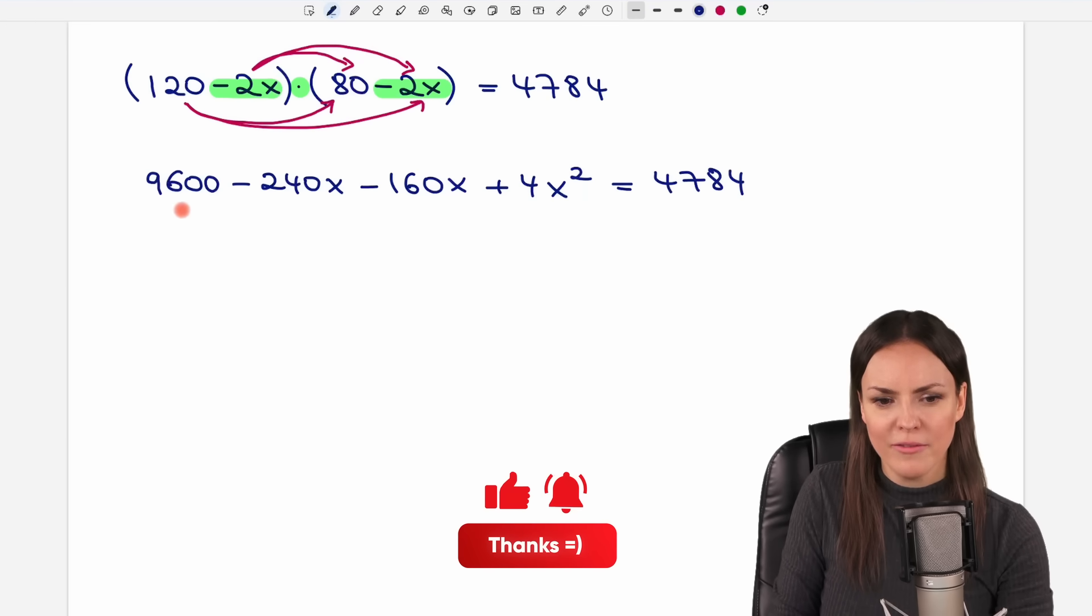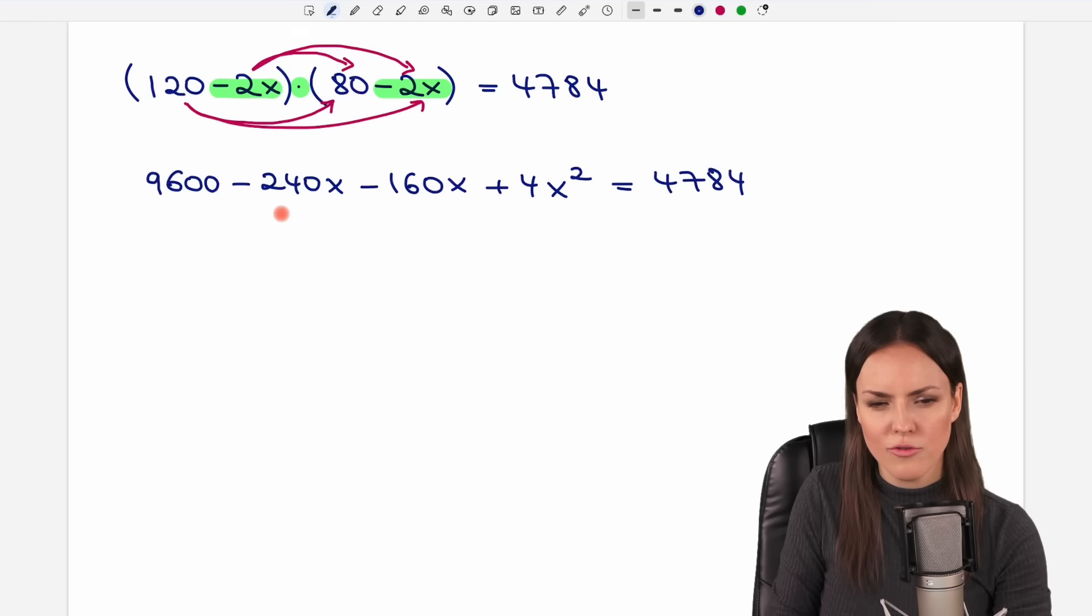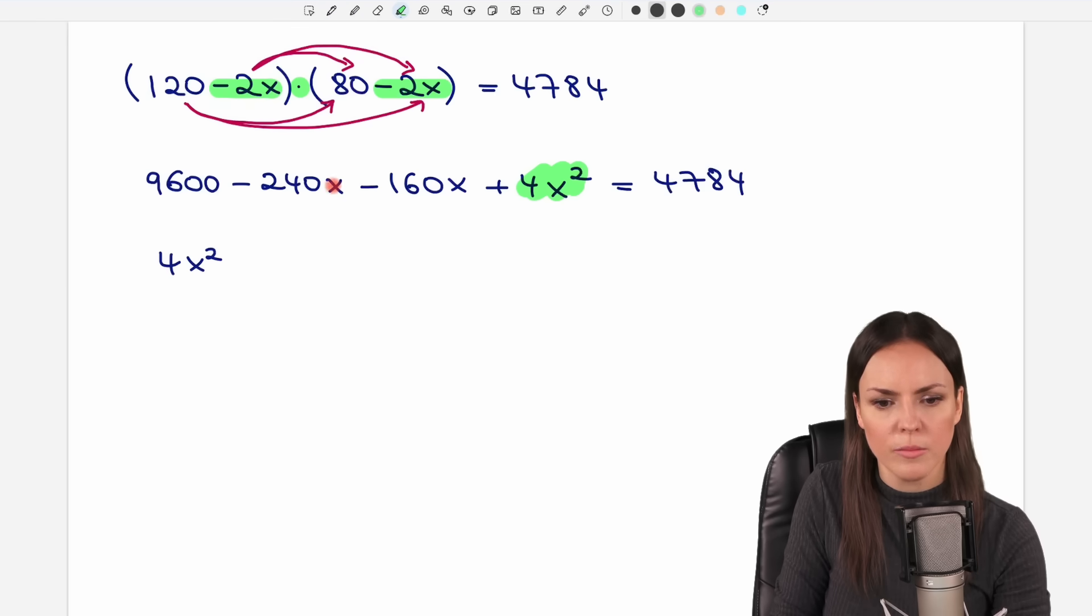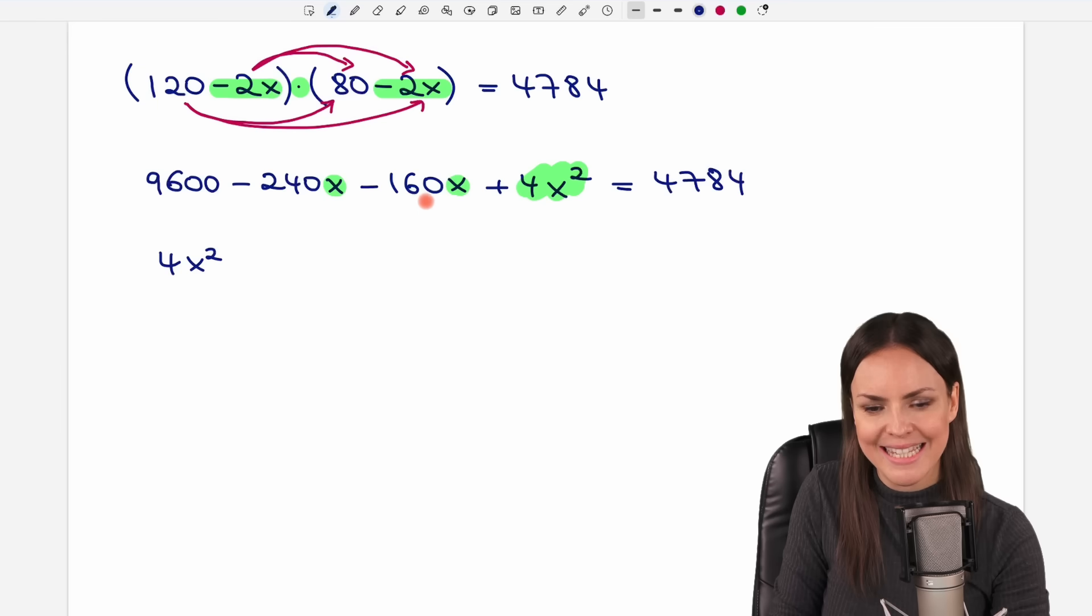Let's simplify the left side and let's rearrange the terms here a little bit. We start with 4x squared. Then we simplify the terms with an x. Negative 240 minus 160 equals negative 400x. Then the number and then we still have this beautiful number on the right side.